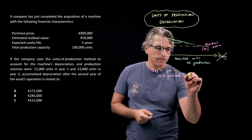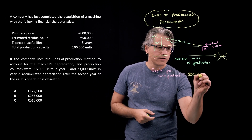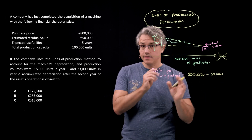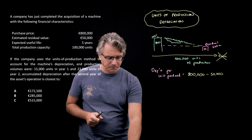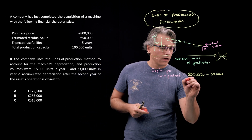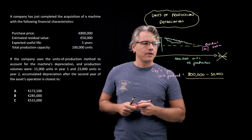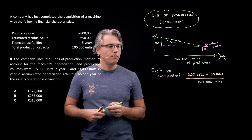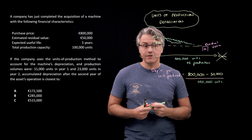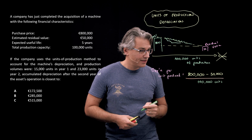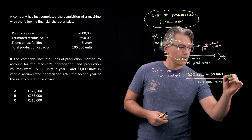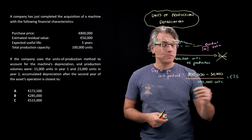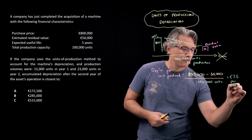So: €800,000 — that was our initial cost — minus the residual value of €50,000 gives us the depreciable amount. We divide that by the 100,000 units. In the numerator we've got €750,000 divided by 100,000 — nice and easy. This gives us €7.50 of depreciation per each unit produced.